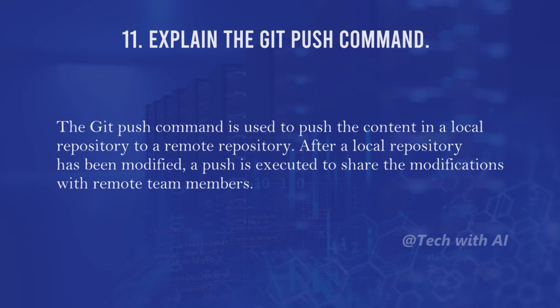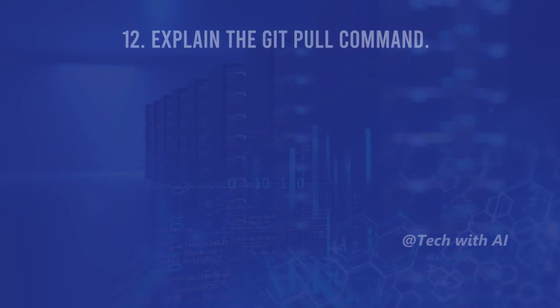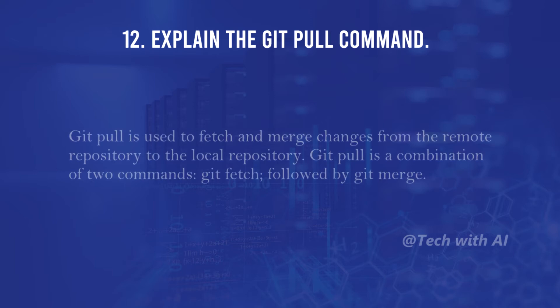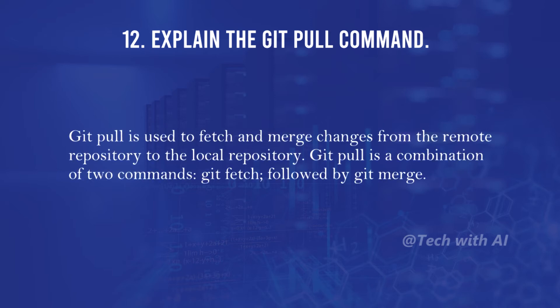Explain the git pull command. Git pull is used to fetch and merge changes from the remote repository to the local repository. Git pull is a combination of two commands: git fetch followed by git merge.